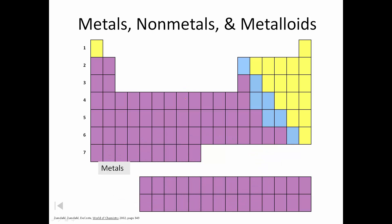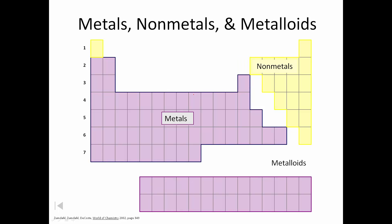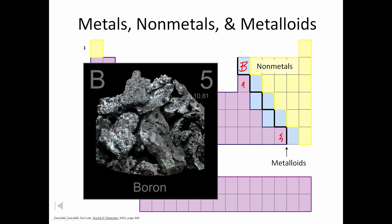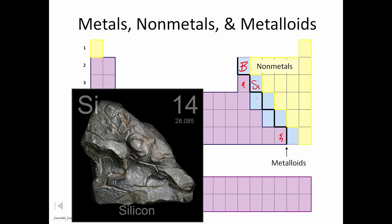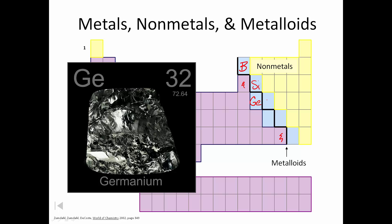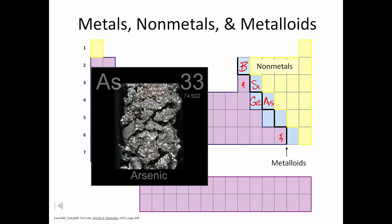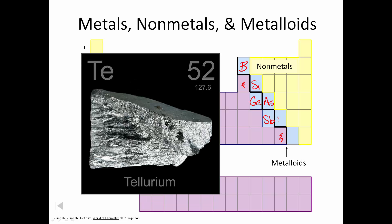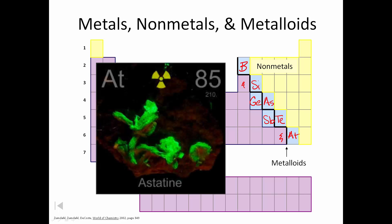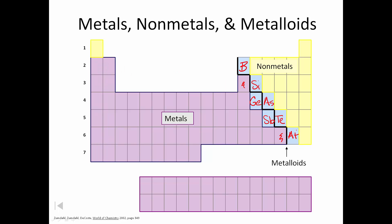Looking at our periodic table, the metals are on one side, nonmetals on the other, and the metalloids are flashing right there. They kind of make this staircase, but not everything along the staircase is a metalloid. We're talking about boron, then silicon, underneath silicon is germanium, beside germanium is arsenic, underneath arsenic is antimony, beside that is tellurium, and down here is astatine. Astatine is sometimes considered a nonmetal and sometimes considered a metalloid.